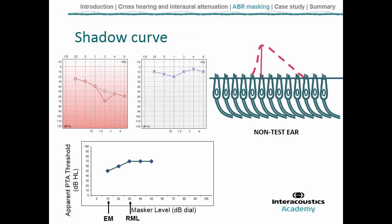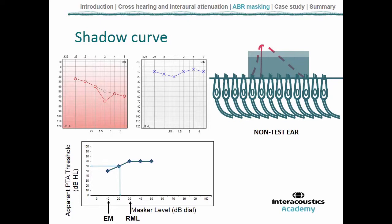Here's that concept explained a little more. We have the effective masker level where it's just beginning to mask the signal — part of the signal is masked out, but there's some activity that could still remain unmasked on the non-test ear, so the patient might still respond. We'd turn the masker up a little, and the apparent threshold in the test ear increases slightly. Then we reach the relative masker level, which is effectively the plateau point on the masking function.